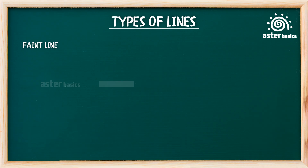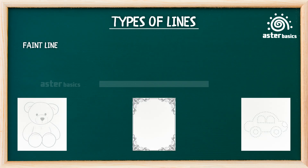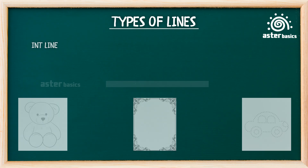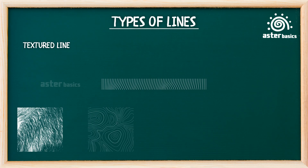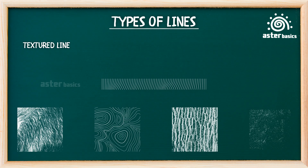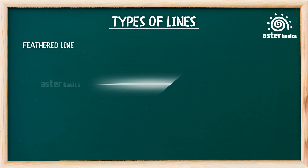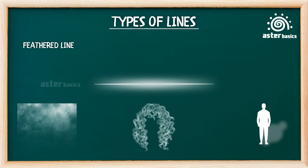Faint line: a light, barely visible line — soft like a shadow. Faint lines are used for sketching ideas, gentle borders, or tracing. They're shy little whispers — like pencil ghosts floating on paper. Textured line: a line that looks bumpy, fuzzy, or rough, like it's made of cloth or stone. Used for creating fun surfaces like fur, fabric, bark, or sand. Textured lines feel like they have personality — scratchy, fuzzy, or fluffy. Feathered line: a line with soft, blurry, or fading edges — gentle like a feather. Feathered lines are used for drawing clouds, hair, shadows, or soft designs. They float like dandelions in the wind — soft, dreamy, and perfect for magic or fairies.